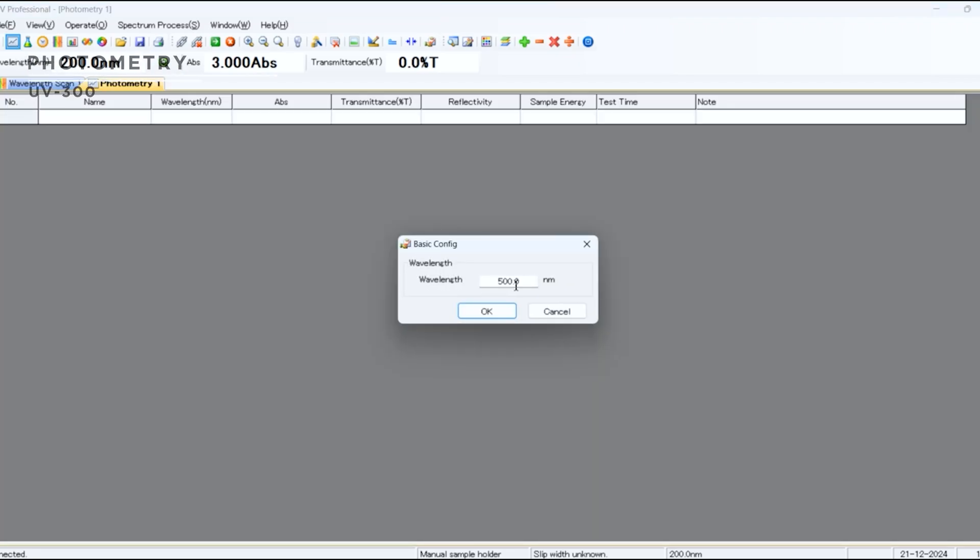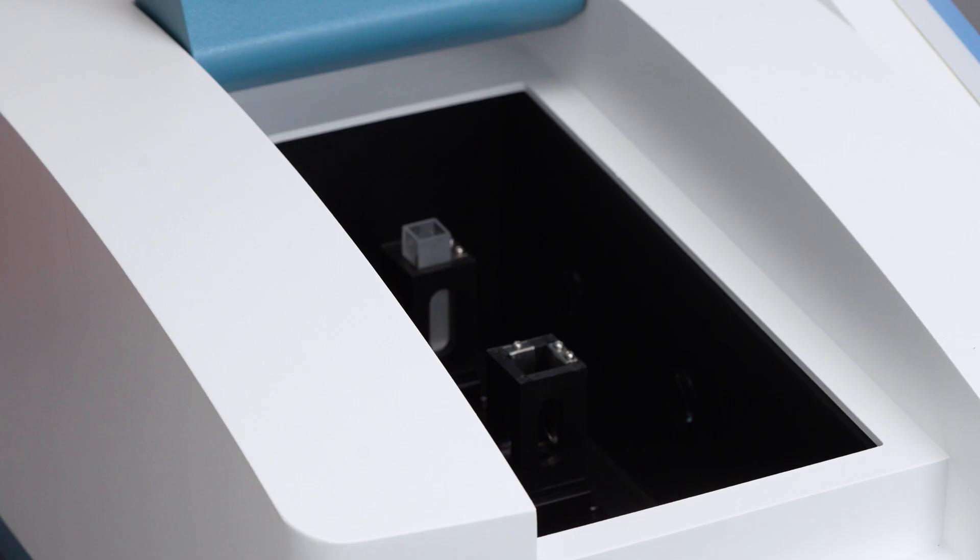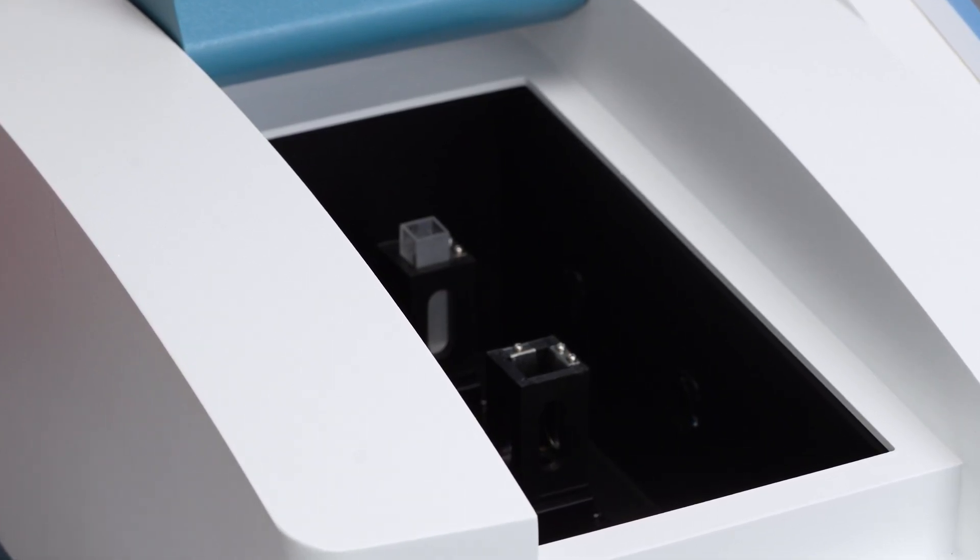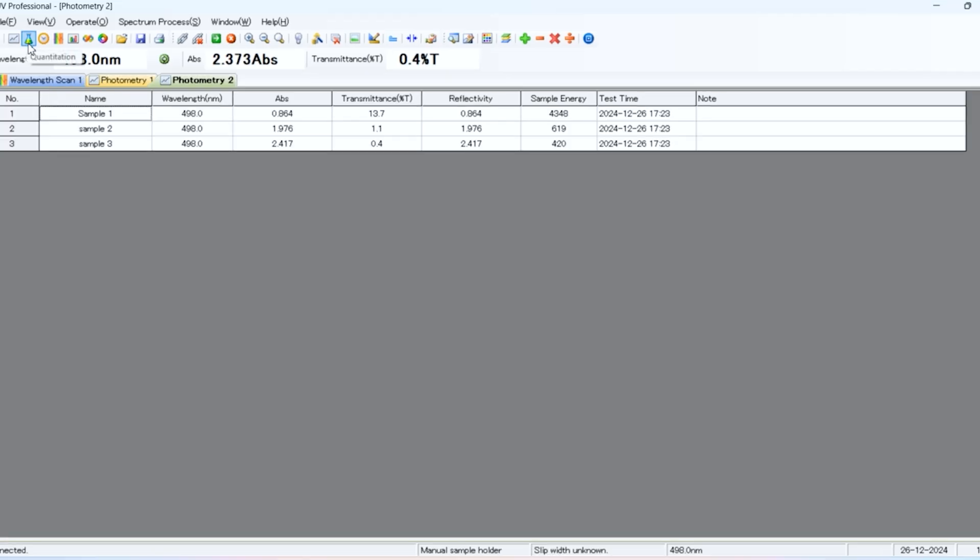Input the desired wavelength and click OK. Place a blank solution in the light source, followed by the sample. Right-click and select start test to measure absorbance for your samples.